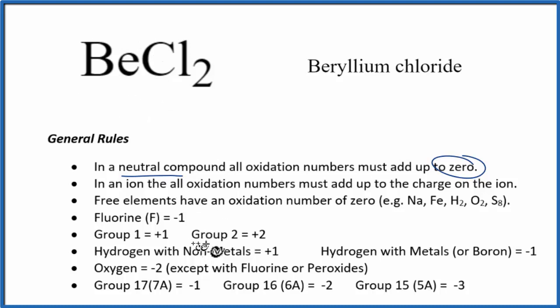Beryllium, that's in group two on the periodic table. It's going to have a plus two oxidation number. Chlorine, that's in group 17, sometimes called 7A, that'll have a minus one. So each chlorine atom has an oxidation number of minus one.